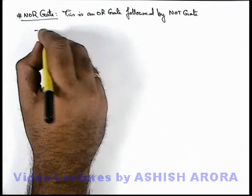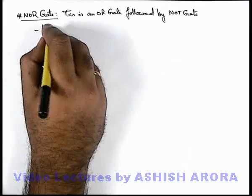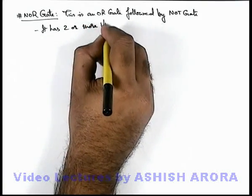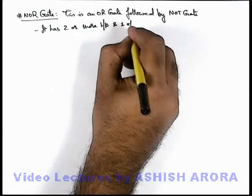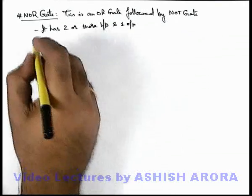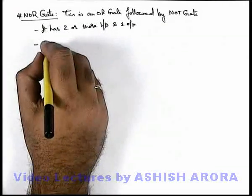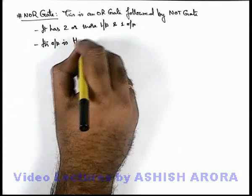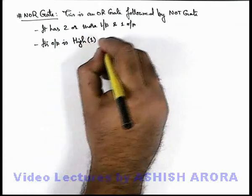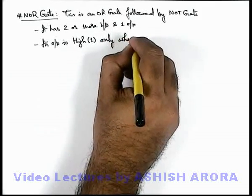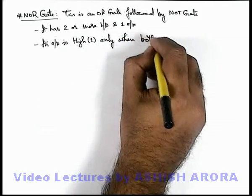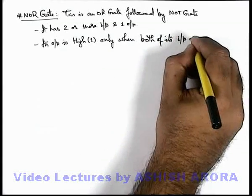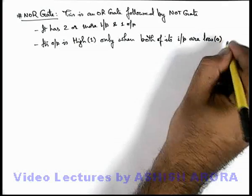Like an OR gate, it has 2 or more inputs and 1 output. Its logic function can be written as: its output is HIGH, that is in state 1, only when both of its inputs are LOW, that is in the zero state.